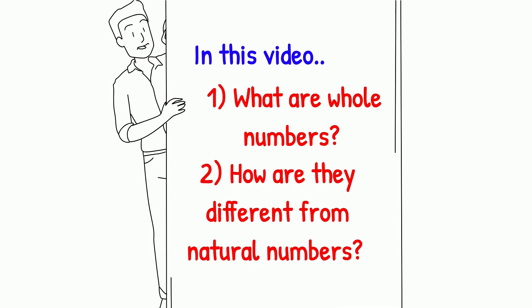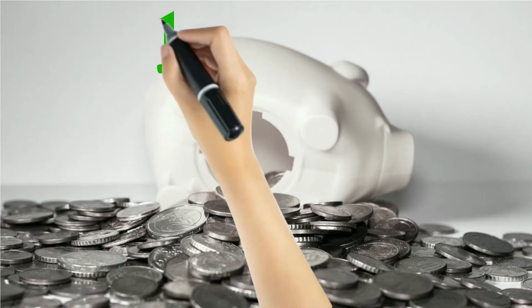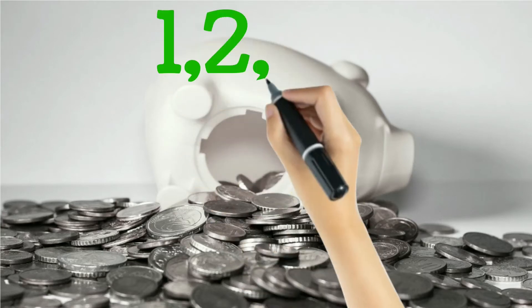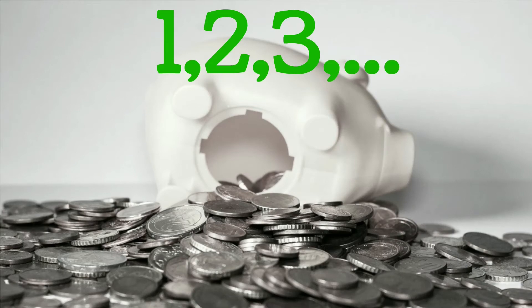So let's get started. Now if I ask you to count these coins — you can see there are so many coins — how do you start counting them? You will obviously start counting from the number one. You won't start from zero; the first count would be one. So you count like this: one, two, three, and so on.